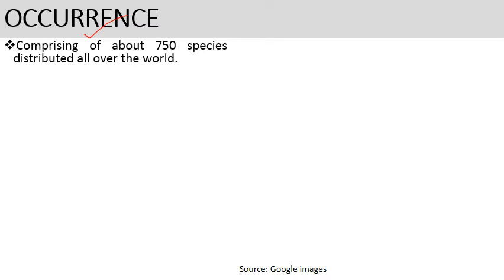Regarding occurrence, Selaginella is distributed all over the world from tropical regions to arctic regions. This genus contains a variety of species — approximately 750 species distributed worldwide.